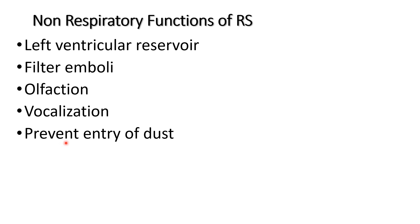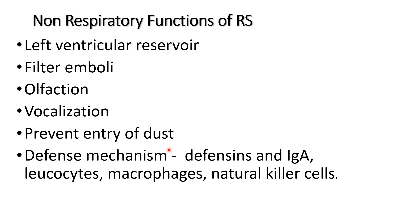The respiratory system prevents the entry of dust particles. Due to local immunity it prevents entry of foreign particles. The nose contains small hairs that prevent the entry of smaller dust particles, and proteases are released that also destroy foreign particles.